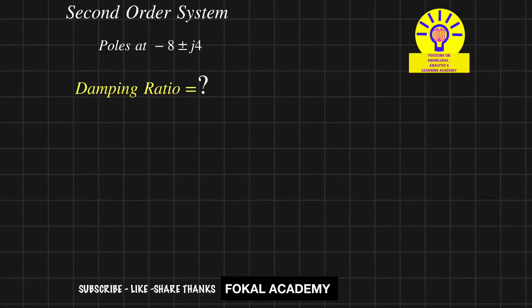Here's a problem where a second order system is given. For this second order system, the poles are at -8 ± j4. What is the damping ratio? We have the standard formula for finding the poles.